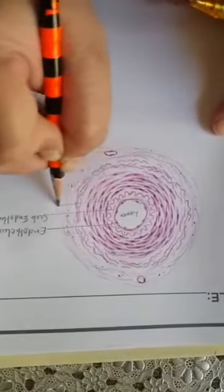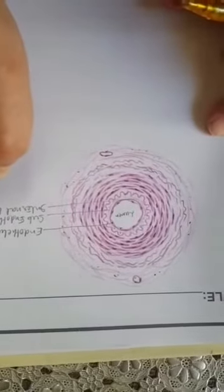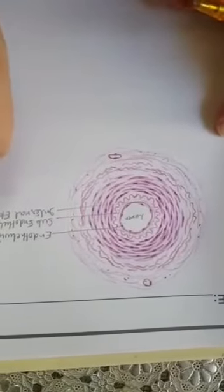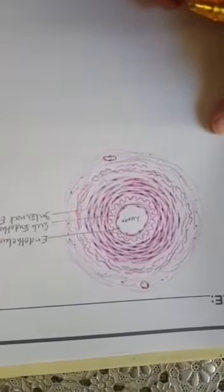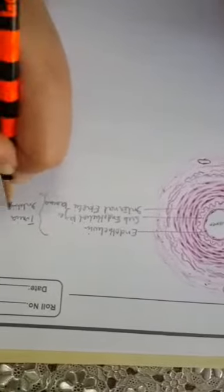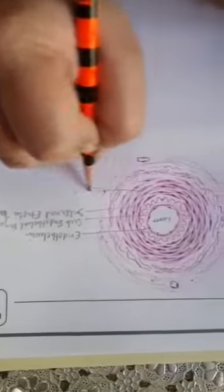Then is internal elastic lamina, and this will form tunica intima. Then there is tunica media with concentric layers of smooth muscles.